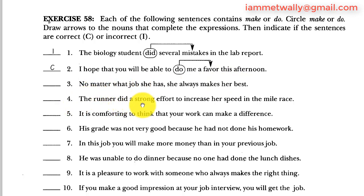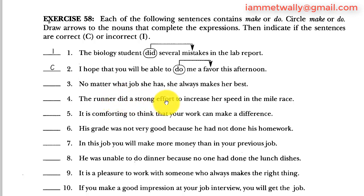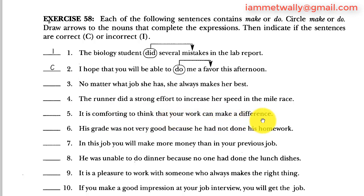Sentence four: the runner did a strong effort to increase her speed in the mile race. The main verb 'did' refers to 'a strong effort.' A strong effort is not something you perform — it is something you build from the beginning; it's a creation of yours. So it should be 'make a strong effort,' not 'do a strong effort.' Sentence four is incorrect.